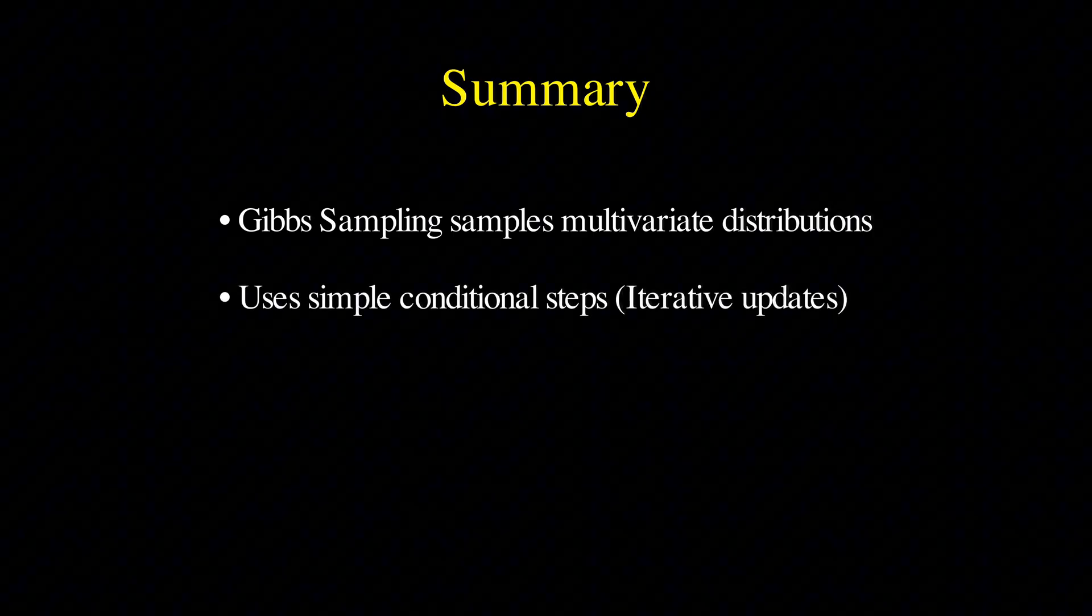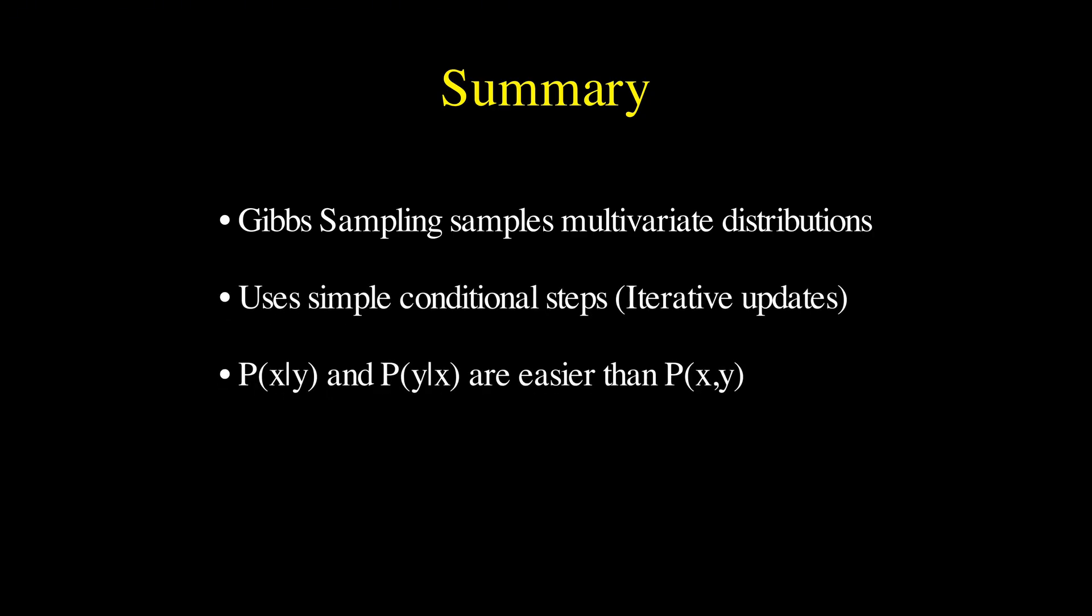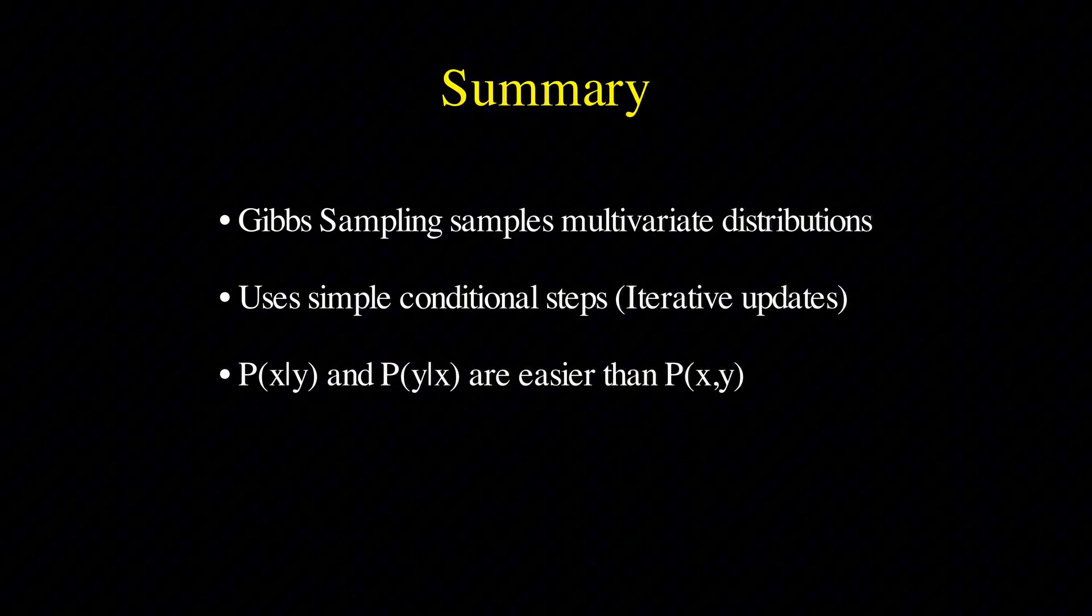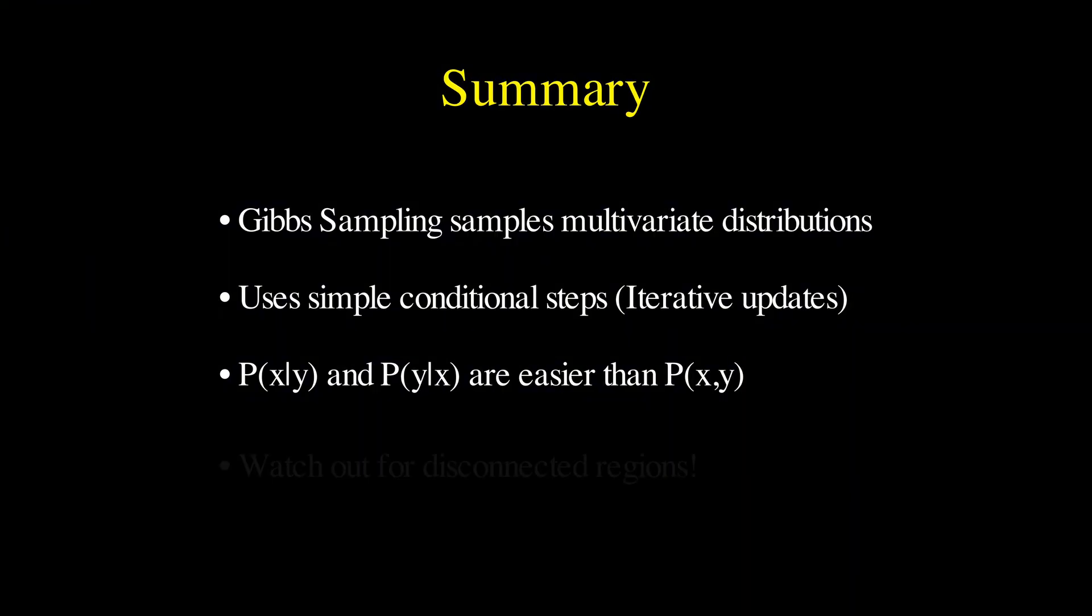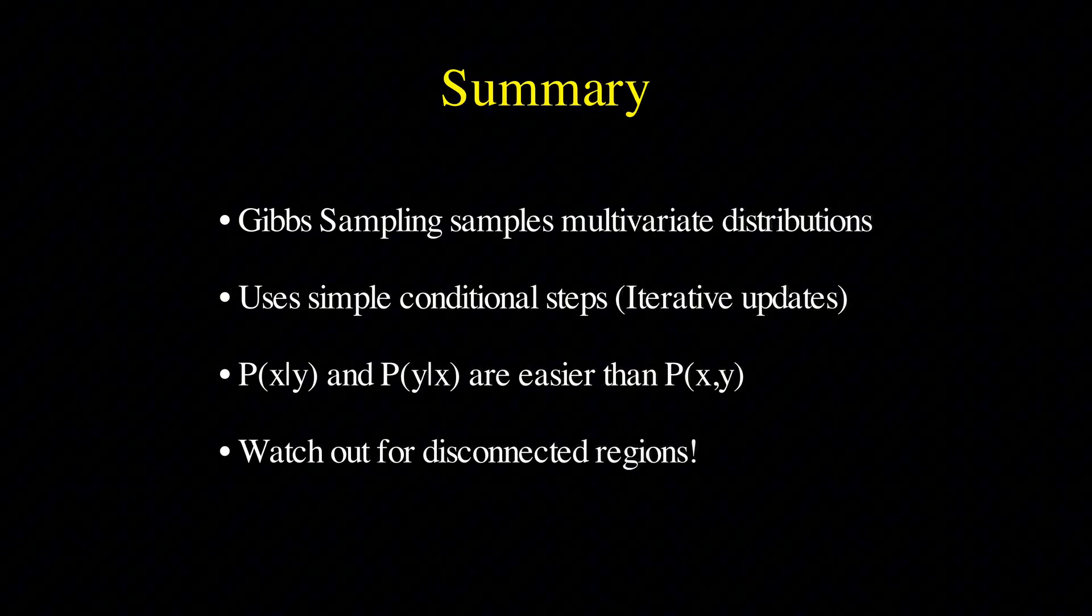To summarize, Gibbs sampling allows us to sample from complex multivariate distributions by iteratively sampling from simpler conditional distributions. It's a fundamental tool in statistics and machine learning, provided we are careful about convergence and connectivity.